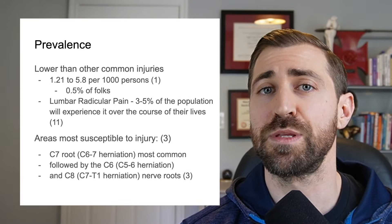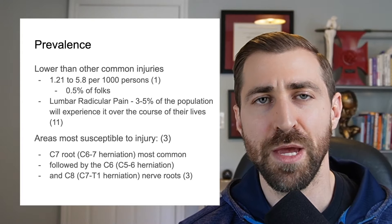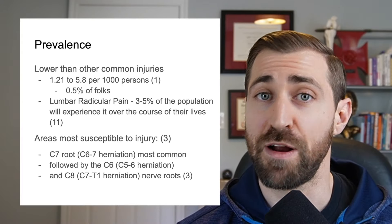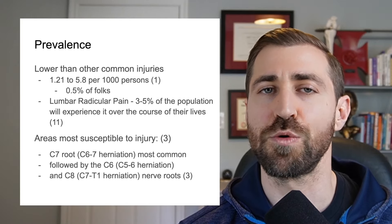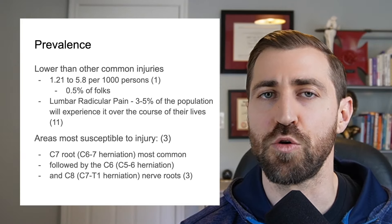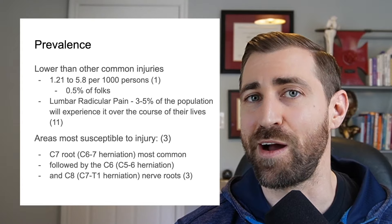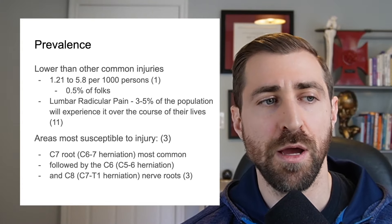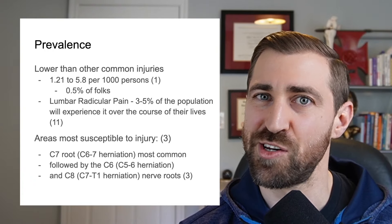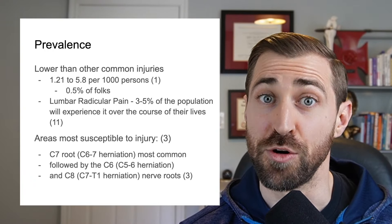Which areas of the cervical spine are most susceptible to radiculopathy? Numbers vary between research studies, so references are included in the show notes. The C7 nerve root is most commonly injured, followed by C6, and then C8.